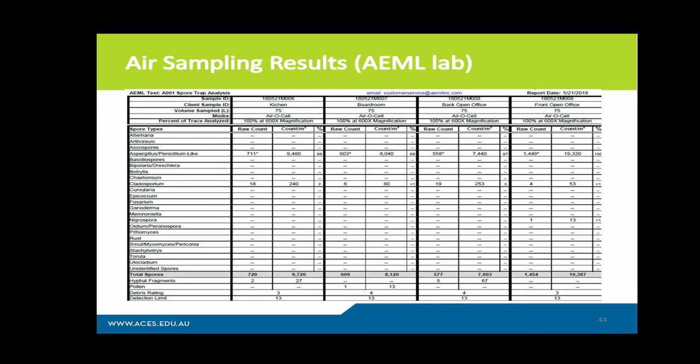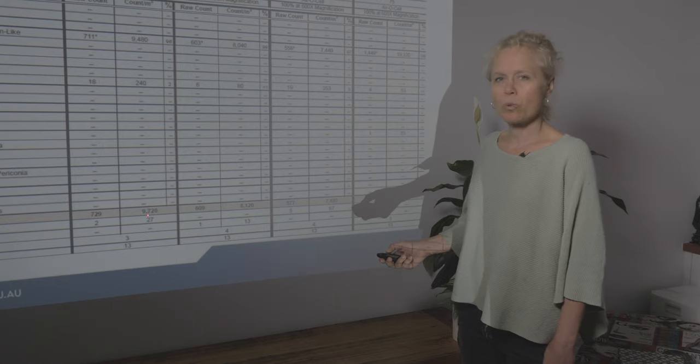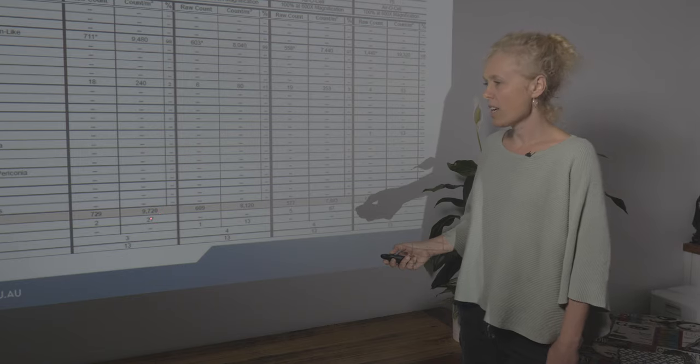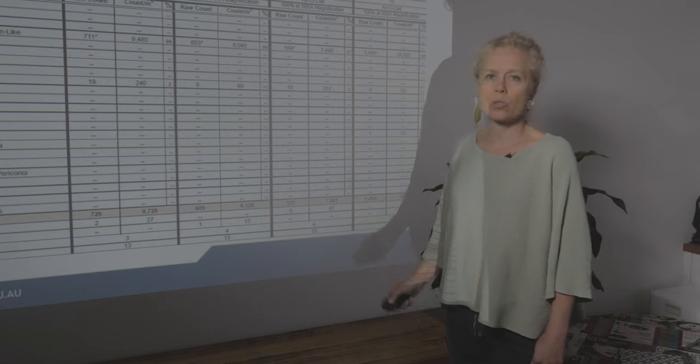Here's an example of what you'll get from the lab for an air sample. In the kitchen, Aspergillus was 9,480 spores per cubic metre, while in the outdoor sample it was zero — a huge problem. Cladosporium was 240 indoors with nothing outdoors. Total spores were 9,720 per cubic metre in the kitchen. Hyphae were 27 indoors versus zero outdoors — a really big problem.